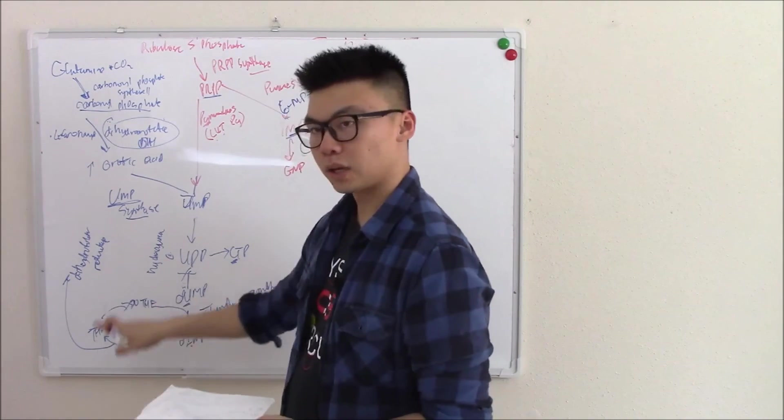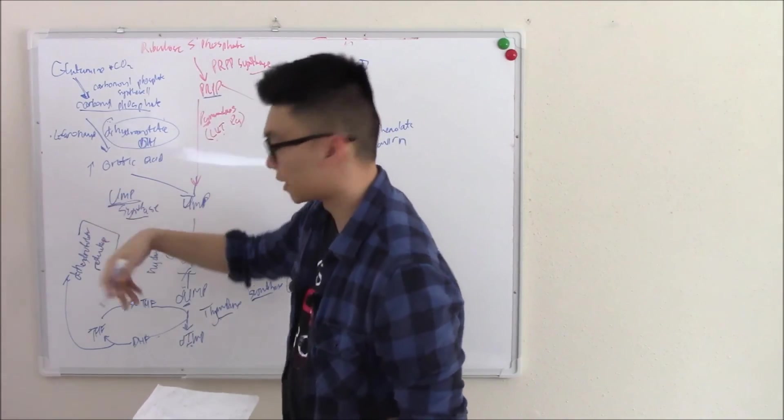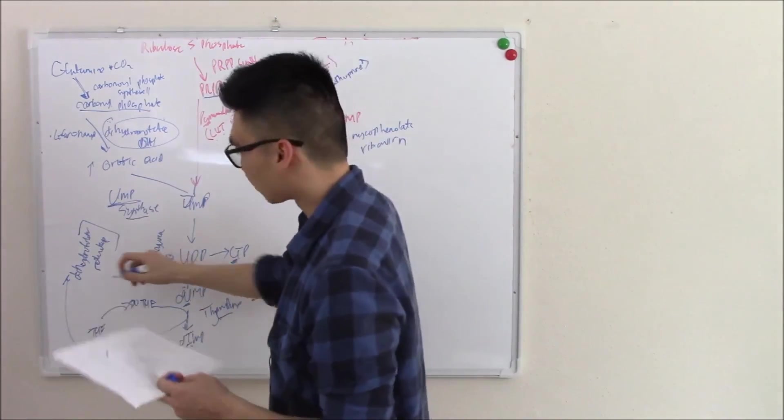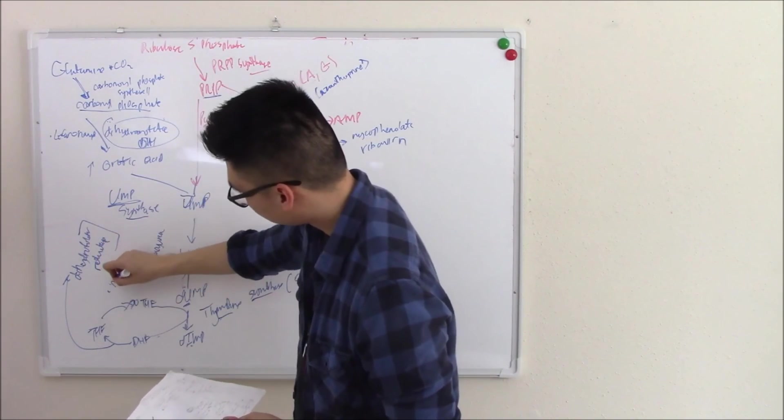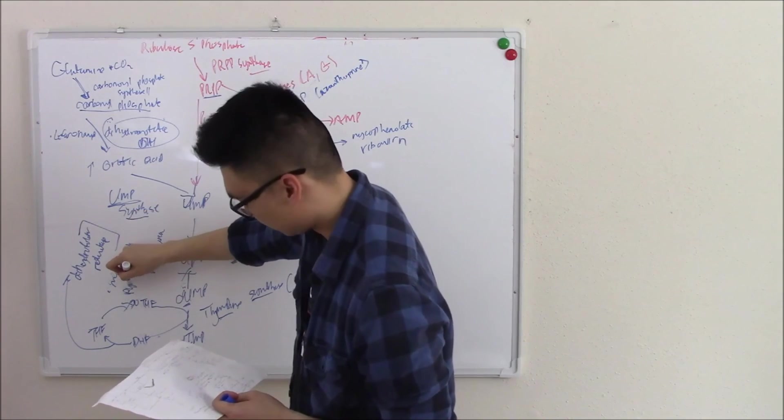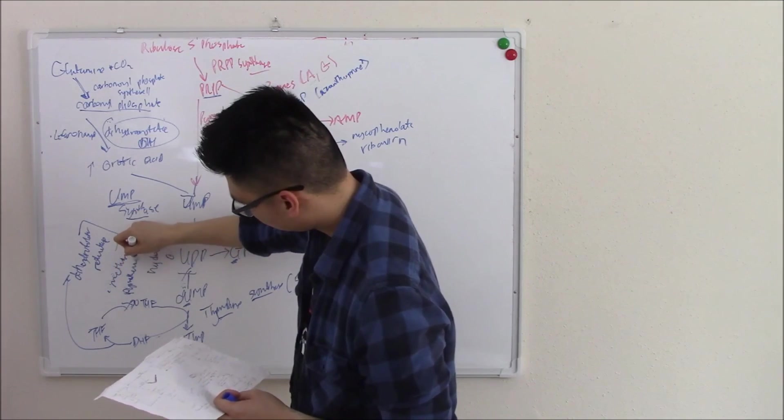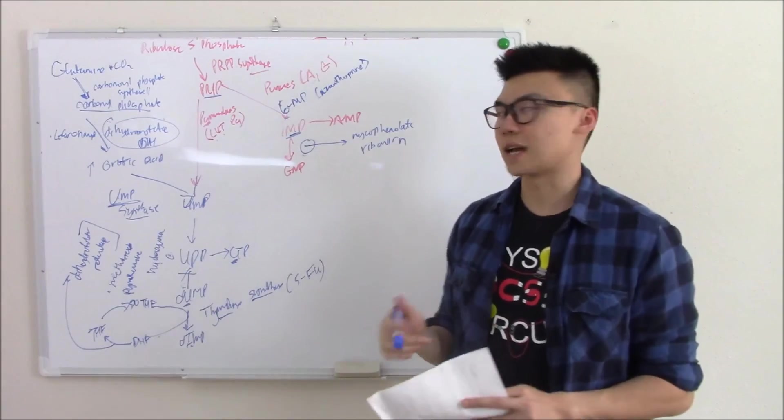And then this whole folate cycle, especially dihydrofolate reductase, the enzyme that recycles it, can be blocked by things like methotrexate. So methotrexate, pyrimethamine, which is an anti-parasite. I think that does it for nucleic acids.